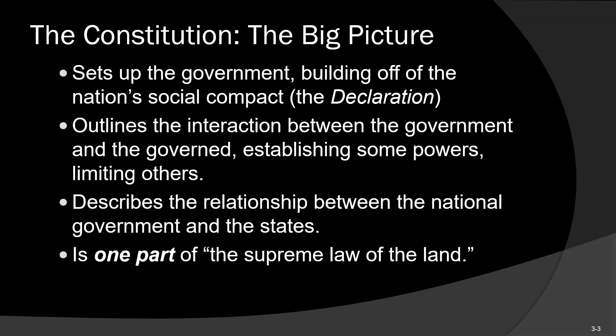The Constitution also describes the relationship between the federal government and the governments of the states. In our system, we are governed both by the national government — Congress and the President — and by our state governments with governors and state legislatures. Because you have these two layers of government, the Constitution needed to lay out what powers go to each. They spent a lot of time talking about Congress and its powers. Basically, everything not given to Congress is reserved to the states, though those state powers aren't all explicitly stated.